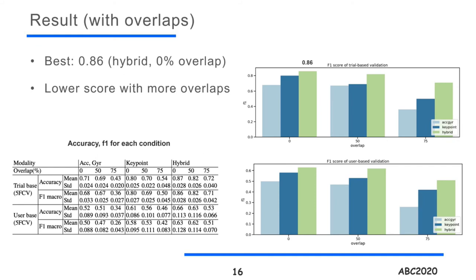Let's move on to the results with the sliding window algorithm. The table on the lower left shows the results of each modality's overlap for each evaluation method. Among all, the best score was 0.86 with the hybrid method without overlaps, and it is confirmed that the accuracy and F1 score decrease with more overlaps.